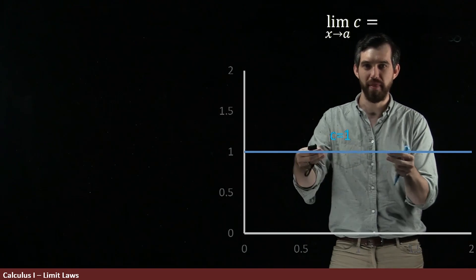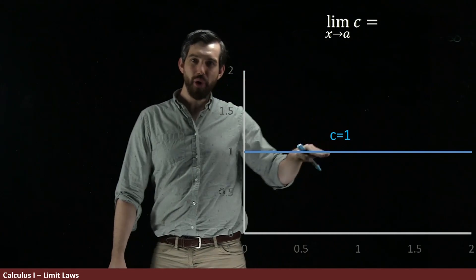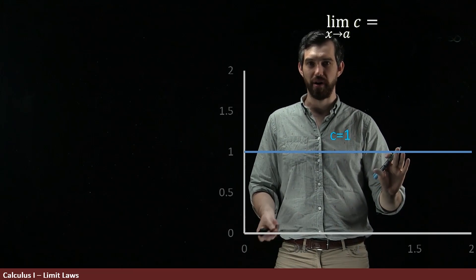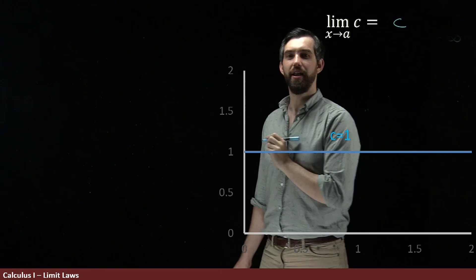The limit as you get close to this point is 1, and on this point, every point you can get close to, the height of it is always 1. So, no matter what it is, it's the value of 1, or in the generic case of an arbitrary c here, I'm going to say the limit is equal to c.